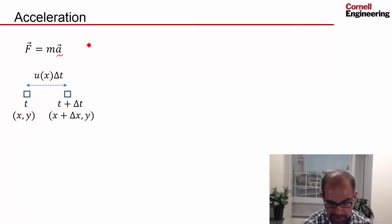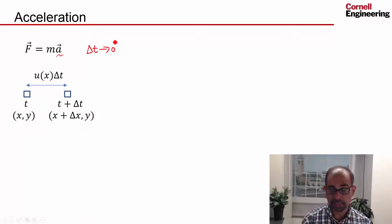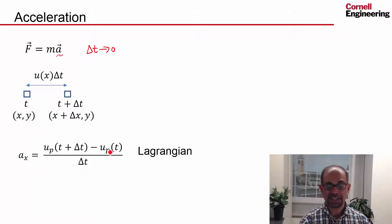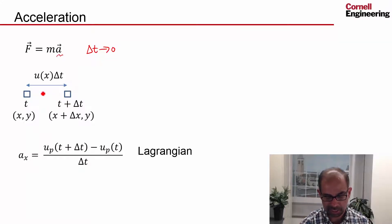This is valid in the limit as delta t tends to zero. The acceleration in the x direction is the velocity of the particle at time t plus delta t, minus the velocity of the particle at time t, divided by delta t, with delta t tending to zero.